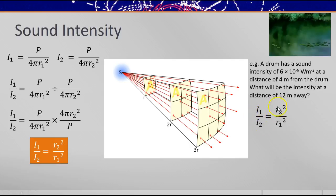So take this intensity formula, I₁ over I₂ is R₂ over R₁ all squared, and rearrange to give the new intensity I₂, which would be I₁ times R₁ over R₂ squared. Don't forget to square them. So I₂ would be this original intensity times 4² over 12² squared, which gives this value 6.6 × 10⁻⁷ watts per meter squared.